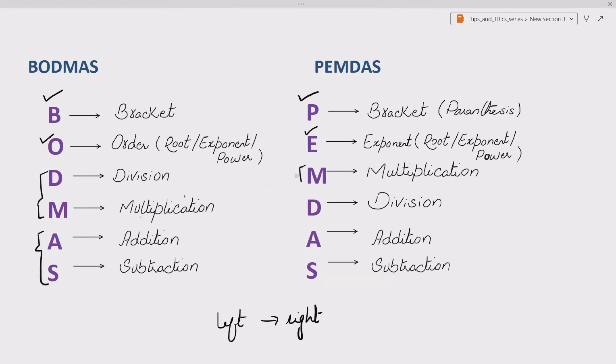But PEMDAS says do multiplication, division, and addition and subtraction. So it means here division first and here multiplication first. Actually, the rule of thumb is division and multiplication have the same level of preference. What does it mean? Whenever division and multiplication are both present in your expression, solve that one first that comes first, i.e., when seen from left to right.